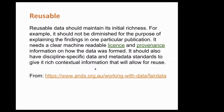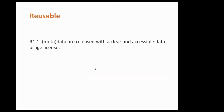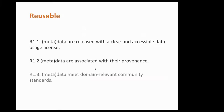Now we're going to get on to Reusable. Reusable is about making data available so that it maintains its initial richness — for example, it should not be diminished for the purpose of explaining findings in one particular publication. It needs a clear machine-readable license and provenance. There are three principles: first, metadata are released with a clear and accessible data usage license; second, metadata are associated with their provenance so we know where and how the data came about; and third, metadata meet domain-relevant community standards.